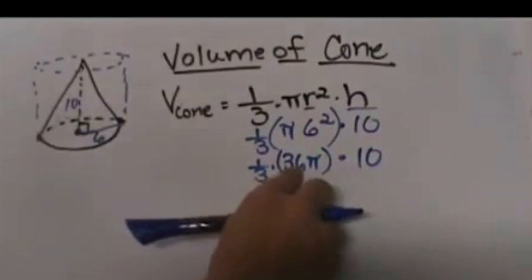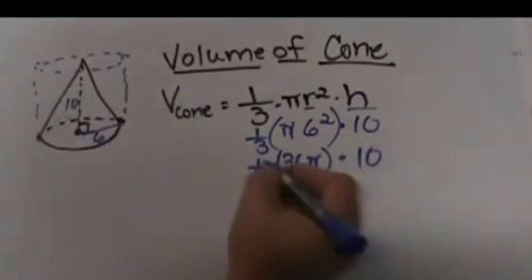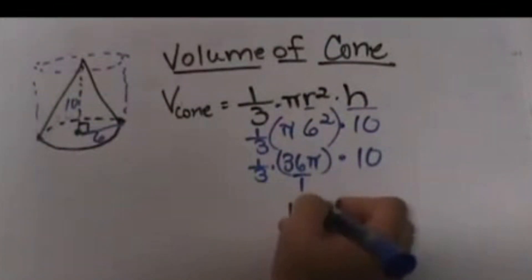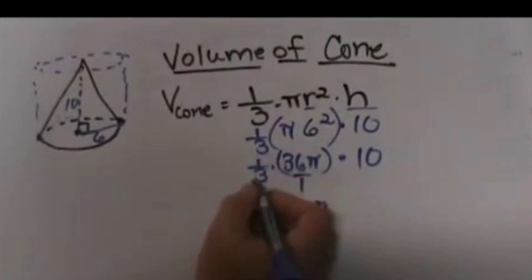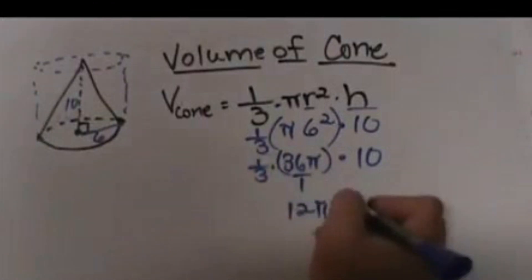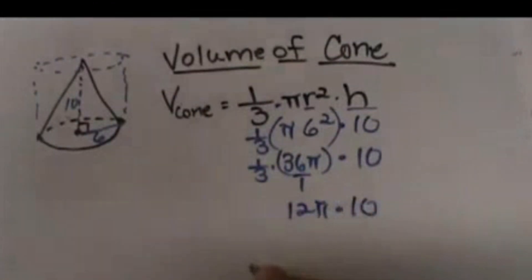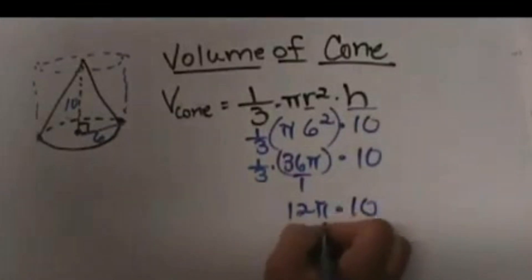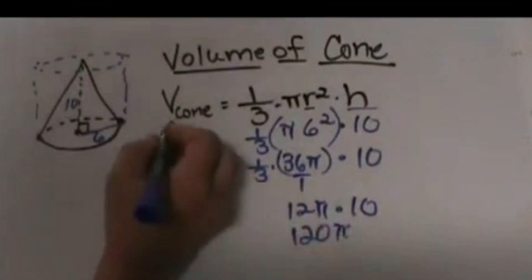Now what's 1/3 of 36? So stick the 6 over 1 and multiply, so that becomes 12π because it would be 36 over 3, which is 12, times 10. So this simplifies down to 120π, and this is volume.